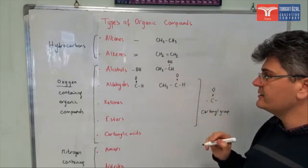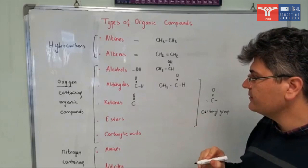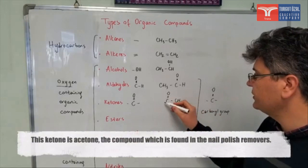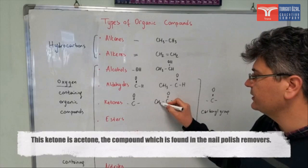Ketones, however, also contain the carbonyl group, but along with that we do have two radicals on the left and right hand side. For example, I can have a CH3 group on one side and another radical like CH3 or C2H5 on the other side.